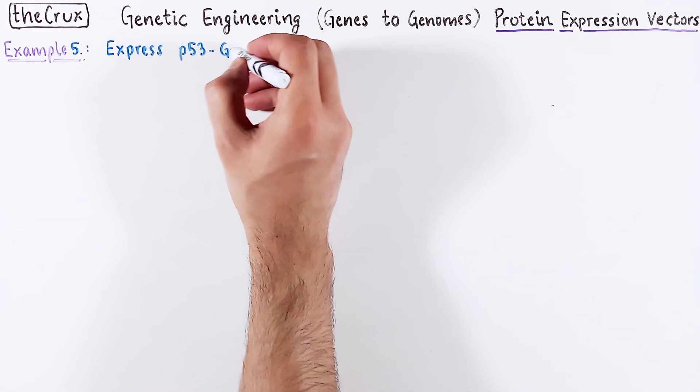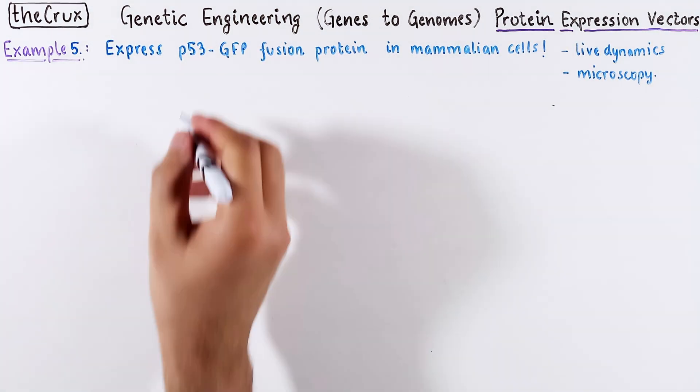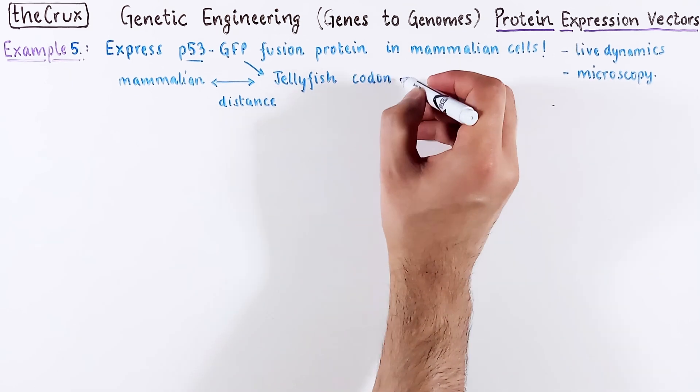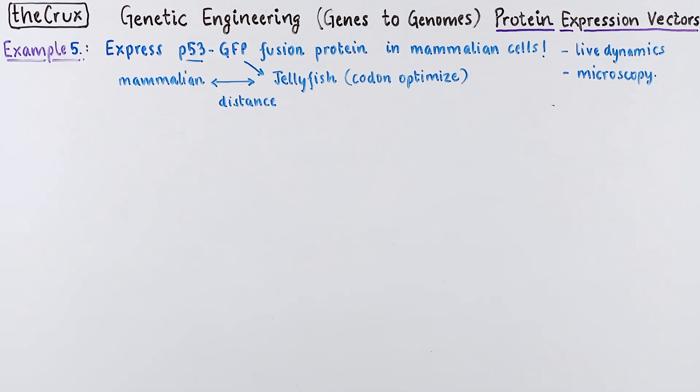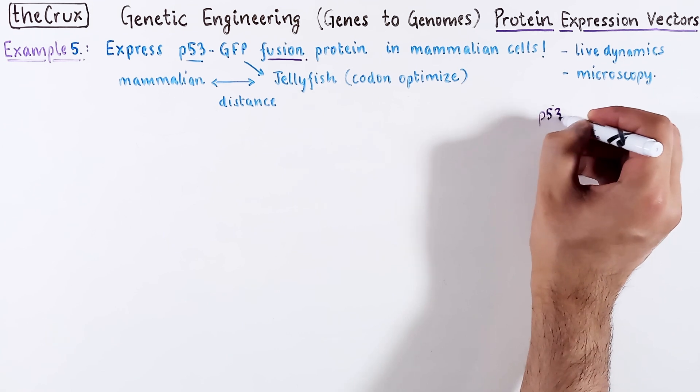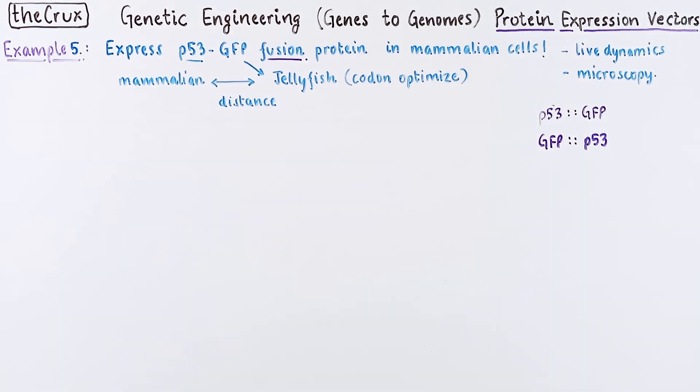Alright, final example. For example, you want to express a P53 GFP fusion protein in a human cell. P53 is natural to humans. GFP is not and it needs to be codon-optimized. Let's talk about fusion. There are two ways to think about this, either GFP in the front or GFP in the back. The choice is not trivial.